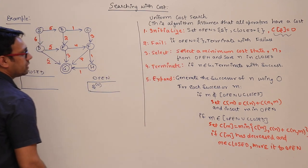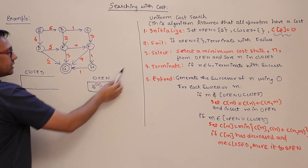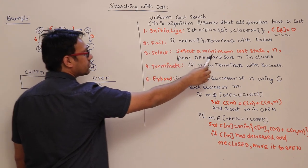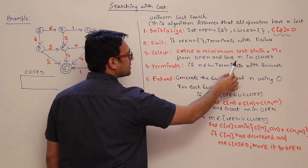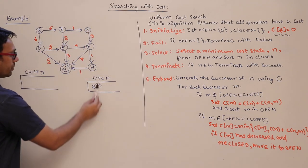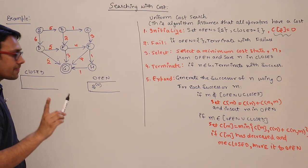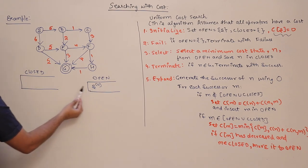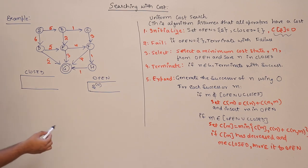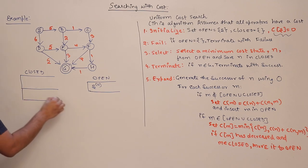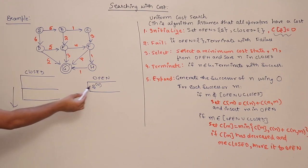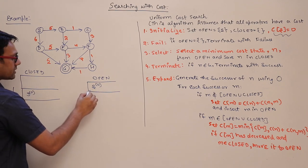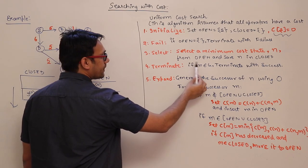Step 2: if open is empty, fail — but open is not empty, so we skip that. Step 3: select the minimum cost state from open and save it in closed. Currently open has only one state, S, so we take S and store it in closed.